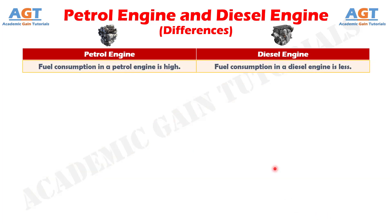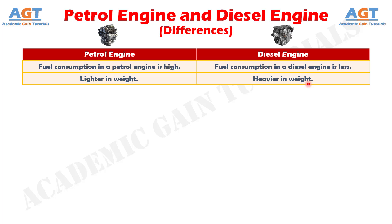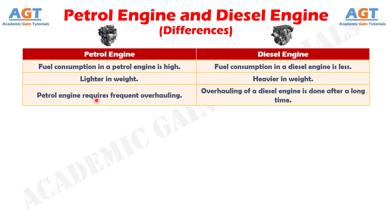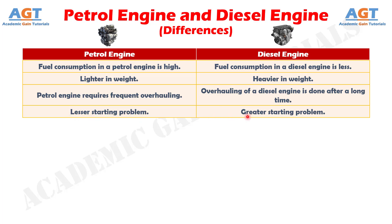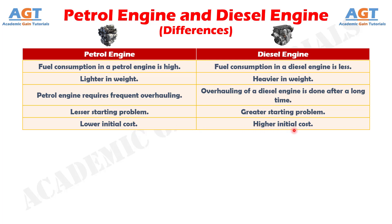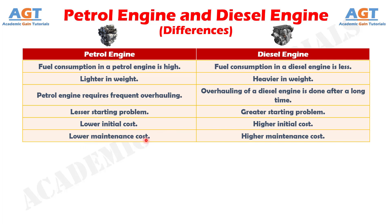Number 9: fuel consumption in a petrol engine is high, whereas fuel consumption in a diesel engine is less. Number 10: the petrol engine is lighter in weight, whereas the diesel engine is heavier in weight. Number 11: the petrol engine requires frequent overhauling, whereas overhauling of a diesel engine is done after a long time. Number 12: the petrol engine has lesser starting problems, whereas the diesel engine has greater starting problems. Number 13: the petrol engine involves lower initial cost, whereas the diesel engine involves higher initial cost. Number 14: the petrol engine has lower maintenance cost, whereas the diesel engine has higher maintenance cost.